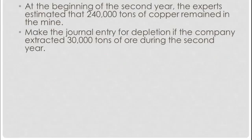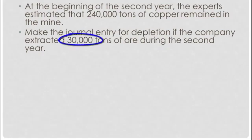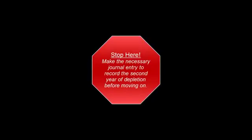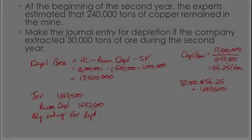Let's take a look at the next year. Year two — we've now been into the mine for a bit. We've got much better estimates; we've seen what's going on a little bit better. Our engineers have re-estimated the value of this mine. They think that even now, even after we took 20,000 tons out last year, we can still get another 240,000 tons out of this mine. Go ahead and make the journal entry to record the depletion of 30,000 additional tons of copper ore in year two. Keep in mind, you've already done some depletion, so you don't need to deplete it again.